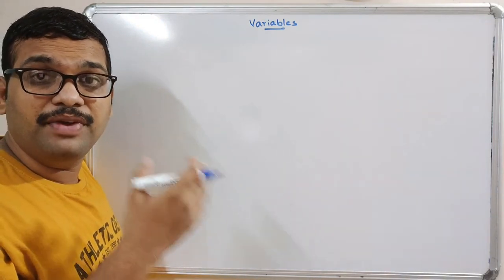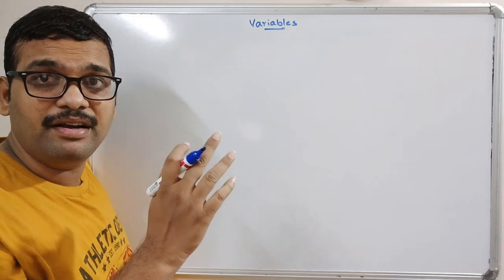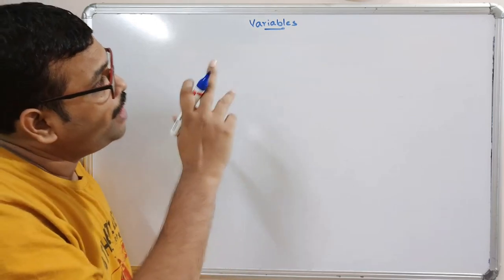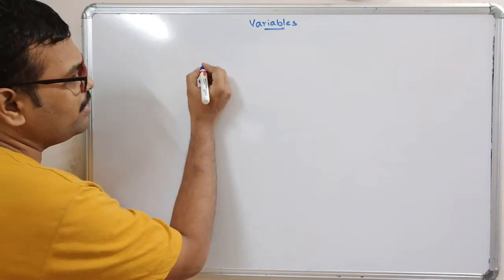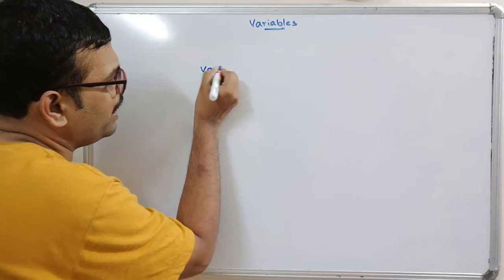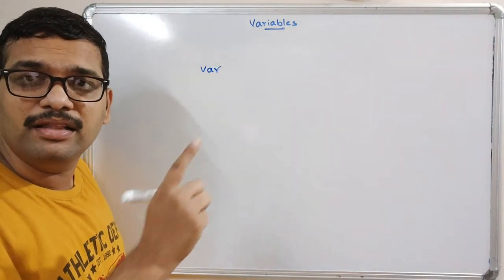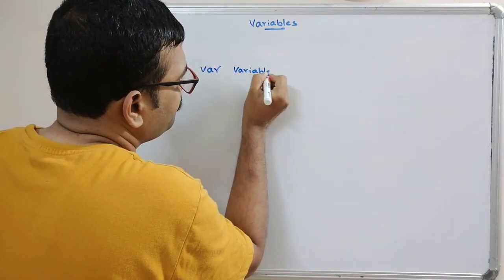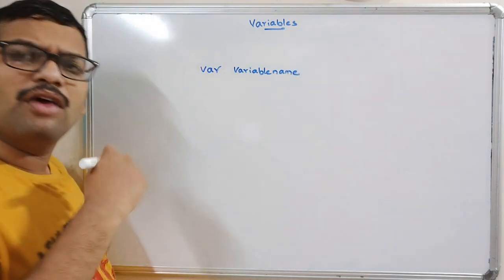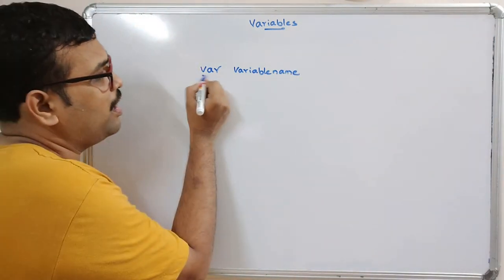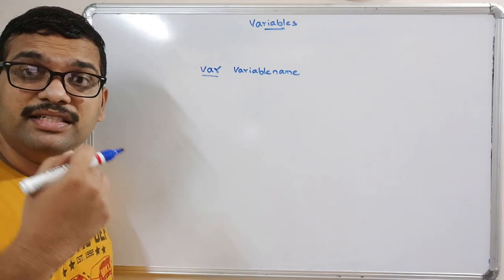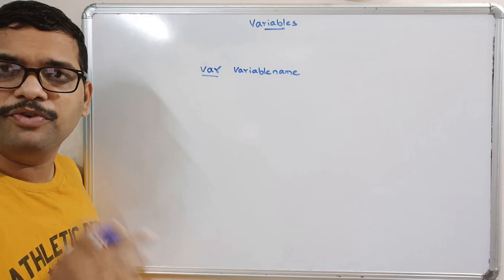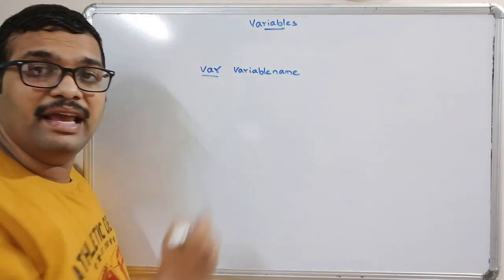In the previous sessions we have seen where to write the JavaScript — the script tag can be written either in the head tag or a body tag. Now, how to declare the variables? We have a keyword called VAR. VAR followed by the variable name. We can declare a lot of variables by using this VAR keyword — either a string, an integer, whatever it may be. Irrespective of data type, we declare variables using VAR.